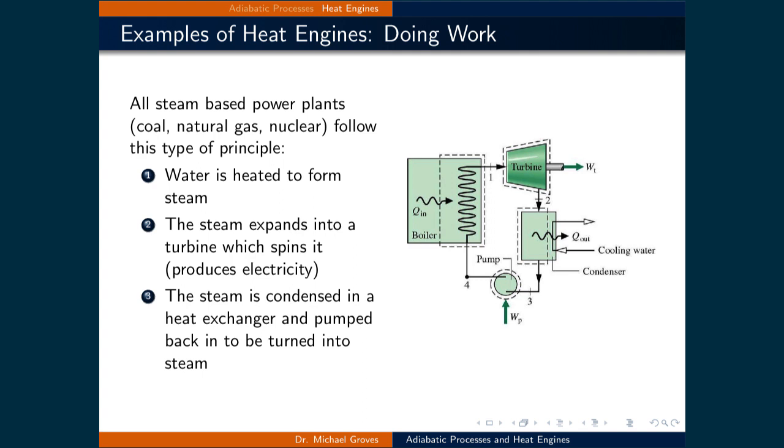Water is heated to form high pressure steam. The steam then expands into a turbine to spin it and produce electricity. The steam is then condensed in a heat exchanger and pumped back into the boiler. The high temperature reservoir is in the boiler that produces the steam. The work output is the electricity generated by the turbine and the cold reservoir is the condenser that transfers heat away from the spent steam to the cold reservoir.